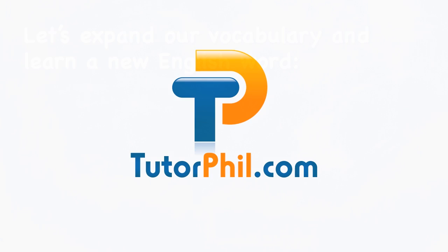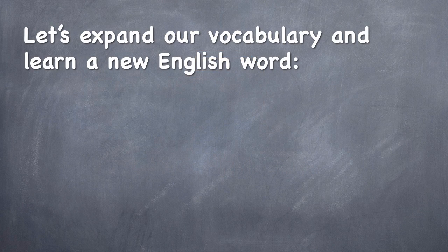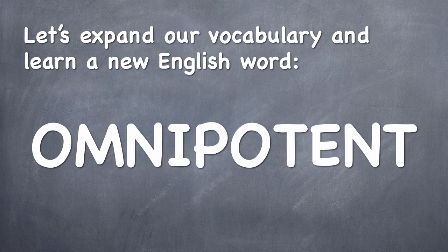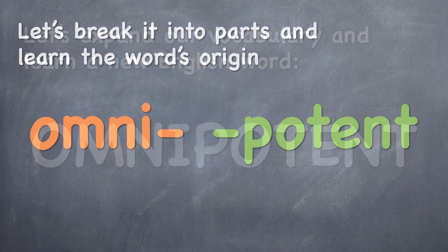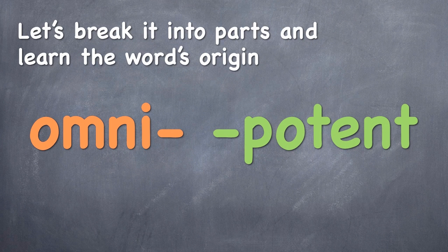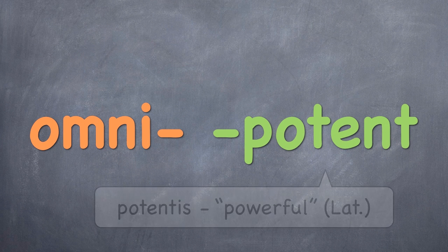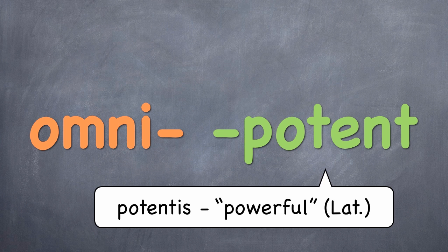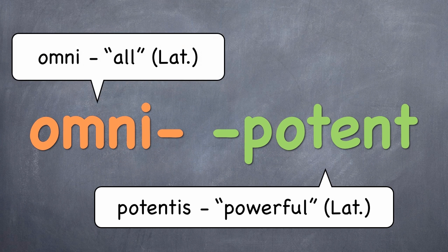In today's video, we'll continue to expand our vocabulary and learn a new English word – omnipotent. Let's break it into parts and learn the word's origin. The root of the word, potent, comes from Latin potentis which means powerful. The prefix omni also comes from Latin and means all. And so the literal meaning of omnipotent is simply all-powerful.